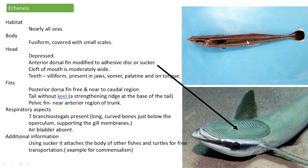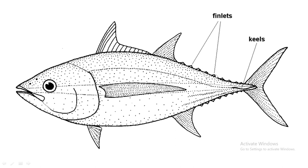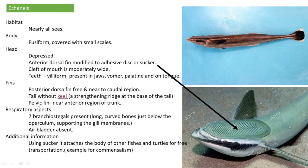Regarding fins, the posterior dorsal fin is free and somewhat near to the caudal region. The tail is without a keel — a keel is a structure that gives strength usually seen at the base of the tail. The pelvic fin is near the anterior region of the trunk. Seven branchiostegal rays are present. Branchiostegal rays are long curved bones found just below the operculum, and they support the gill membranes.